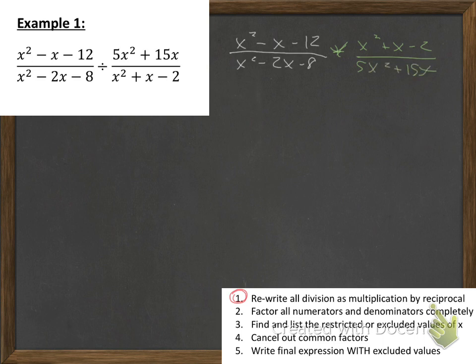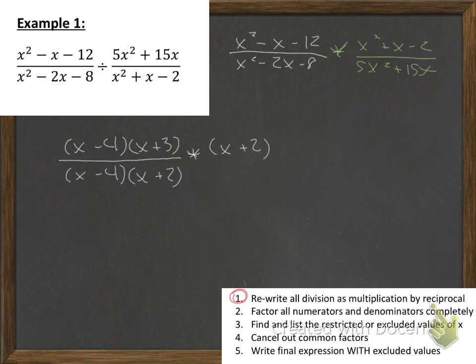Alright, so now we can go ahead and do the fun and exciting part of factoring. So we have x² - x - 12. This factors out as (x - 4)(x + 3). Then we have x² - 2x - 8. This is (x - 4)(x + 2). Bring down the times symbol. Then we have x² + x - 2. We can factor that out as (x + 2)(x - 1). And then last but not least, we have 5x² + 15x. This is just where we look for the GCF. The GCF is 5x, and then we have (x + 3) left over.